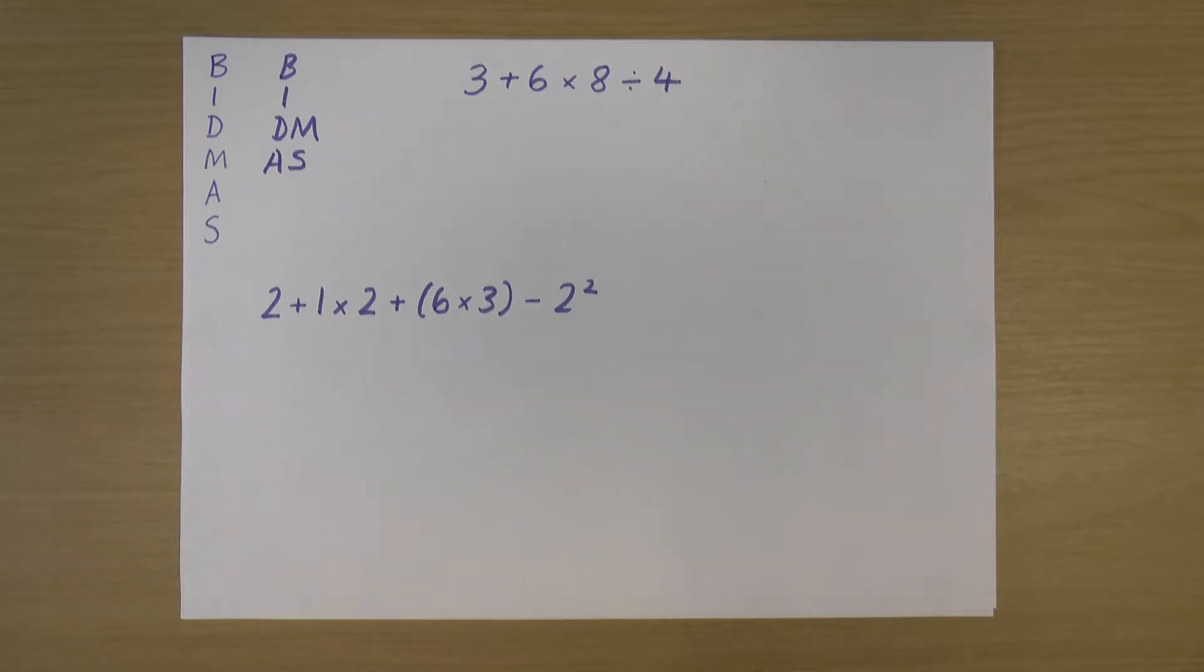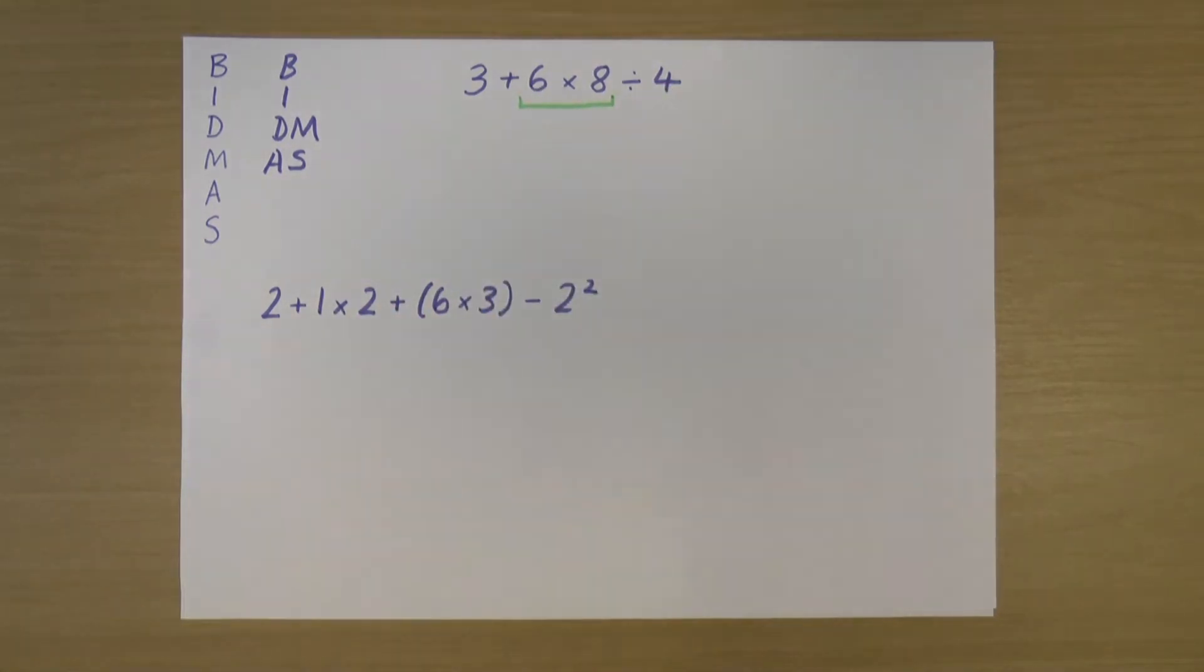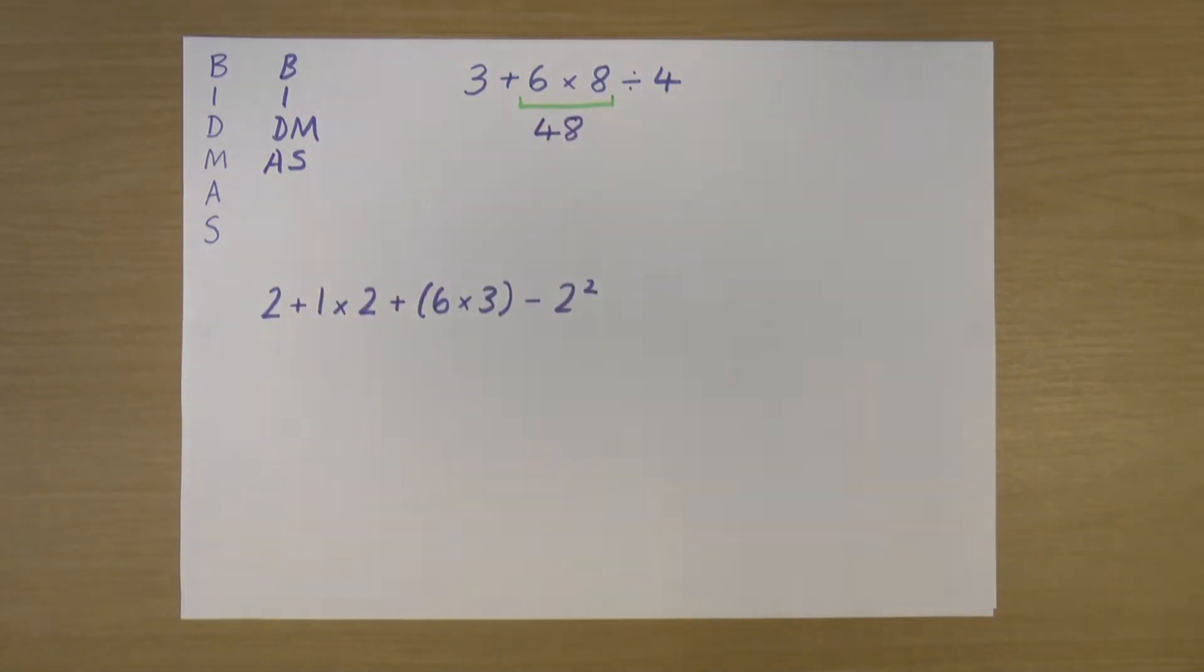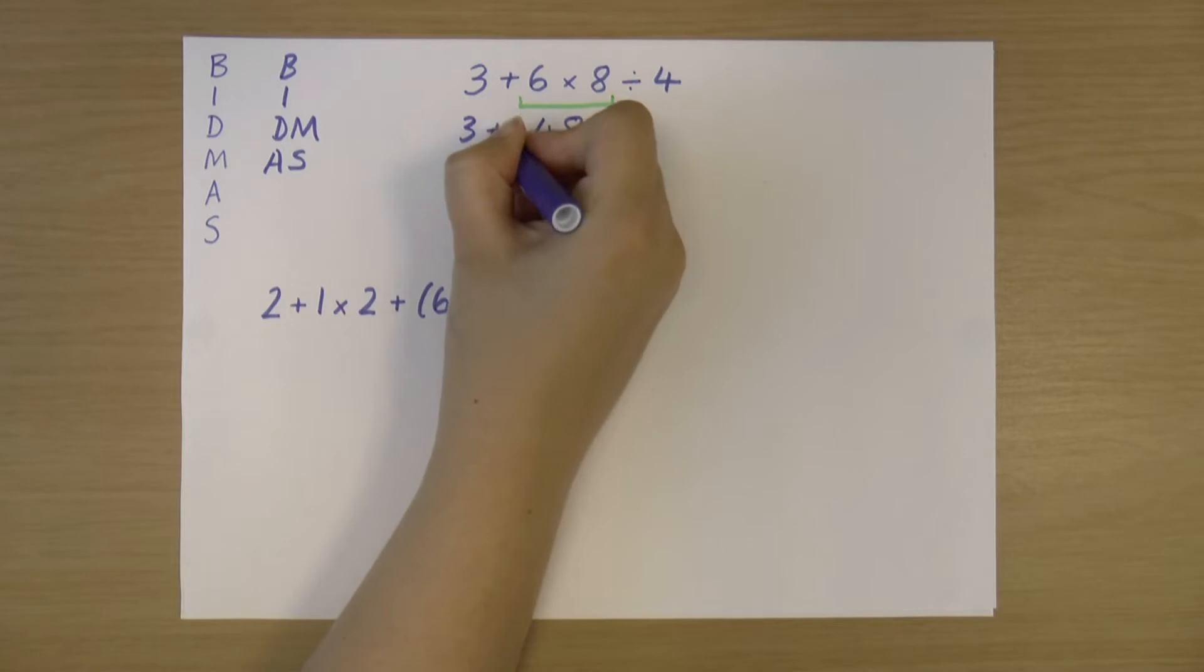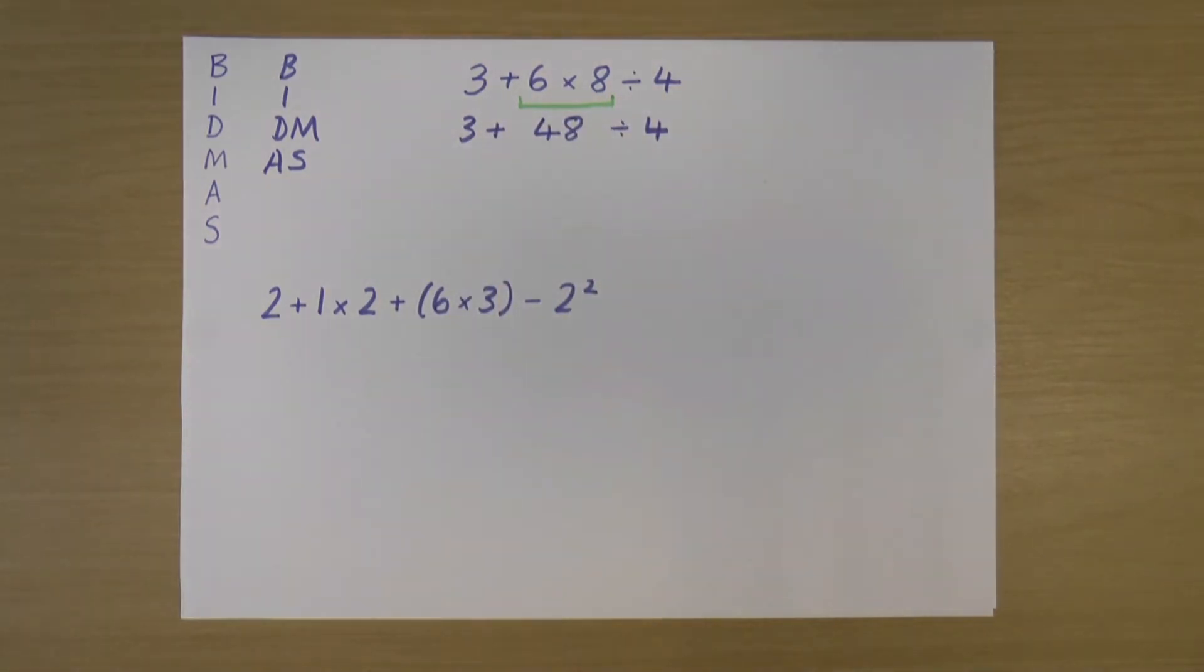The one that is on the left is this here, 6 × 8. So I'm going to do that part of the sum first. So 6 × 8 is 48. And what I'm actually going to do is rewrite the rest of the sum around that. So I've done my 6 × 8, but I still have my 3 + at the beginning, and my ÷ 4 at the end. So I've now got 3 + 48 ÷ 4.